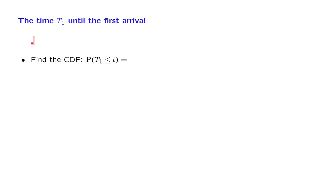So we fix a certain time t, and we're asking for the probability that the first arrival happens during this interval. This is 1 minus the probability that the first arrival happens outside this interval, so we can write this as 1 minus the probability that T1 is bigger than t. The first arrival occurring after time t is the same as saying that there were no arrivals in the time interval from 0 to t.